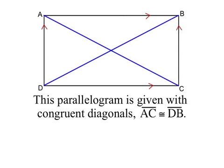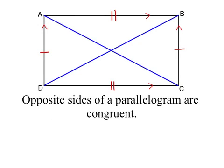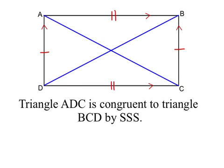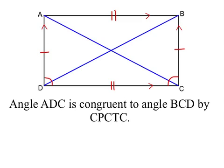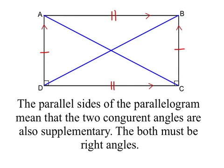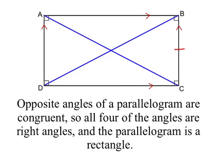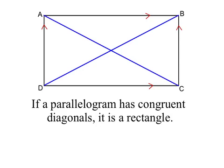Now we're given a parallelogram with two congruent diagonals. Because it's a parallelogram, the opposite sides are congruent, so we have two overlapping congruent triangles ADC and BCD, congruent by side-side-side with the shared side DC. That means angle ADC is congruent to angle BCD by corresponding parts. But those two angles are congruent angles on the same side of a transversal of parallel lines, so they must be right angles. Now we have two right angles of this parallelogram, so all four are right angles, and it must be a rectangle. We've just proven that if a parallelogram has congruent diagonals, it is a rectangle.